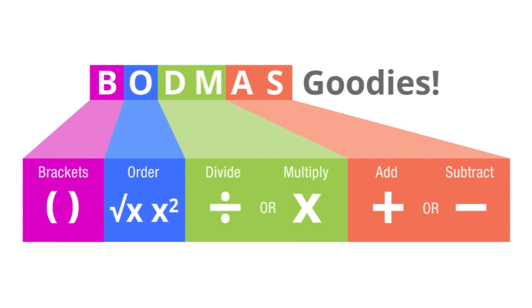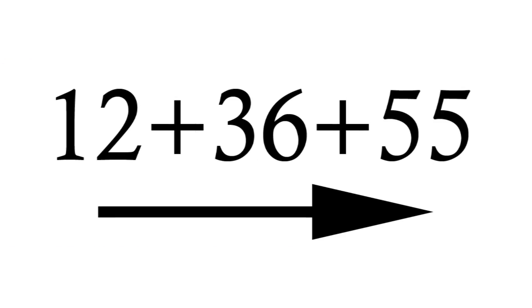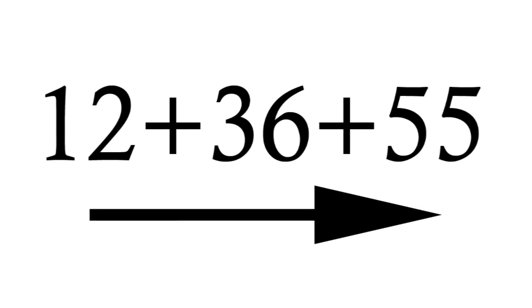It's for the order in which a person should solve an equation. The letters represent brackets, orders, multiplication, division, addition, subtraction. If you have two operations that are the same, they would be evaluated left to right.